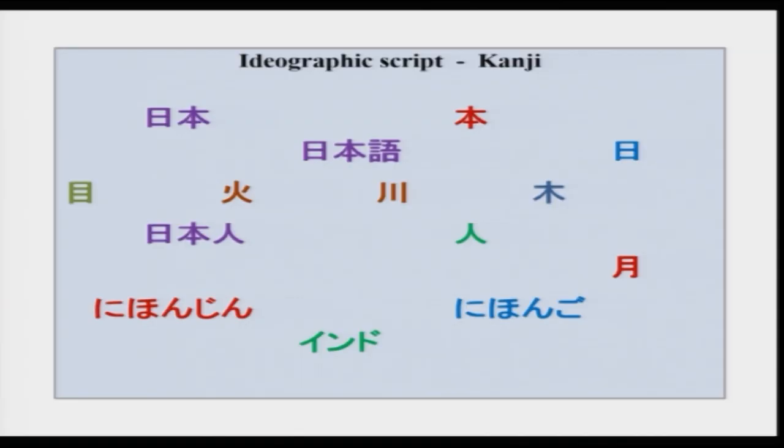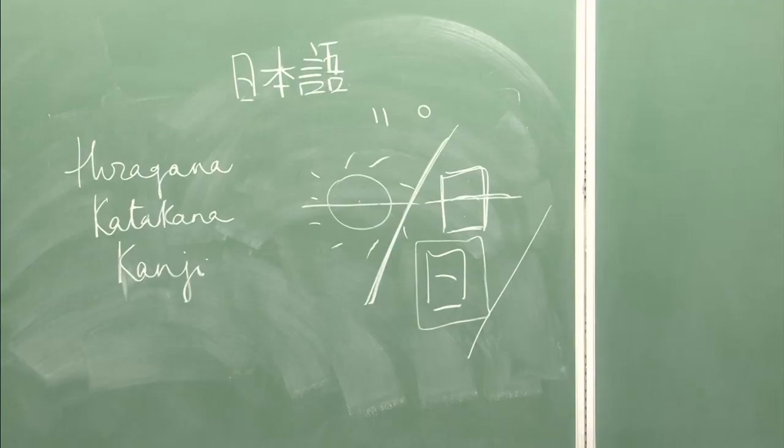The pictograms and ideograms, or kanjis as they are called, can have multiple readings, and there can be many kanjis with the same readings. The two phonetic scripts — hiragana and katakana — are quite similar to Devanagari as they are phonetic in nature.